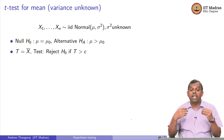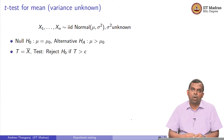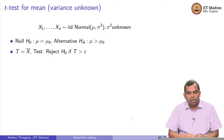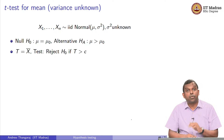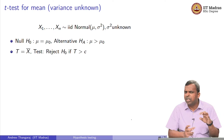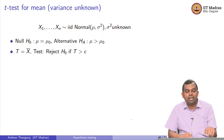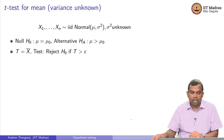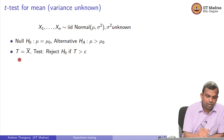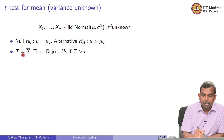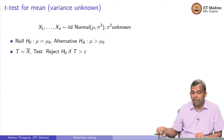Now, what happens when the variance is not known with normal samples? This is a very typical situation. So I am going to do a T test for the mean. This is a test for the mean in the sense that the test statistic is going to be x-bar, the sample mean.